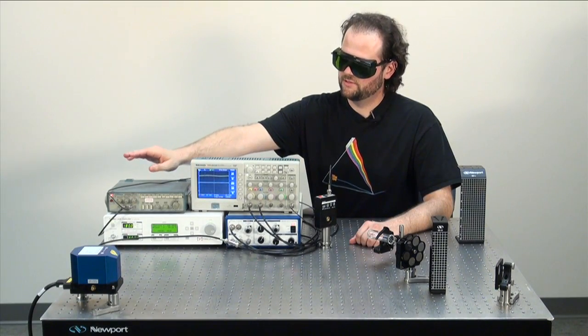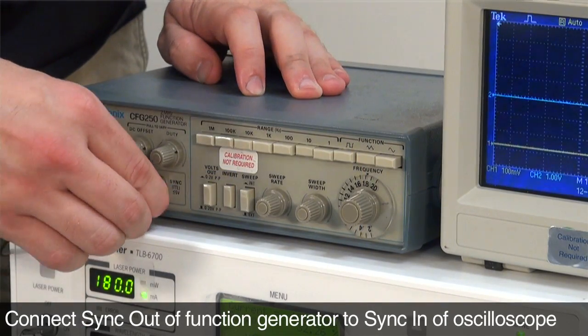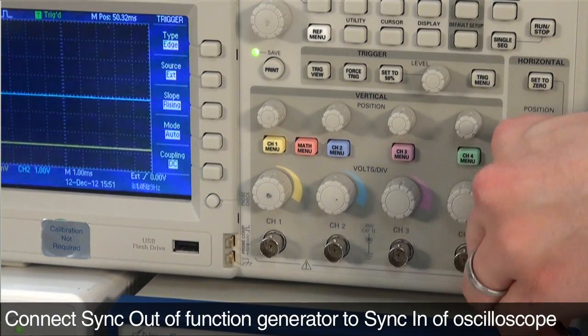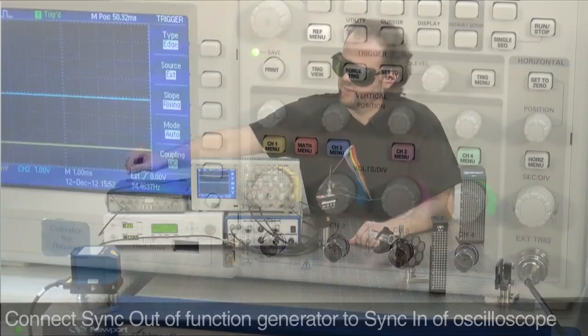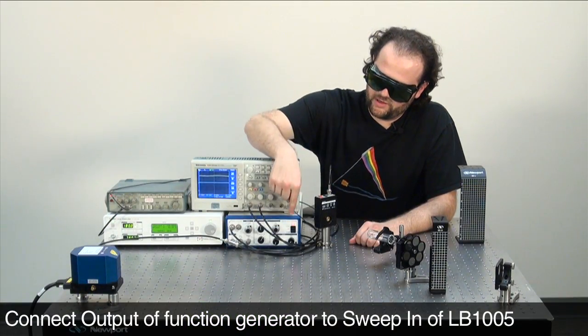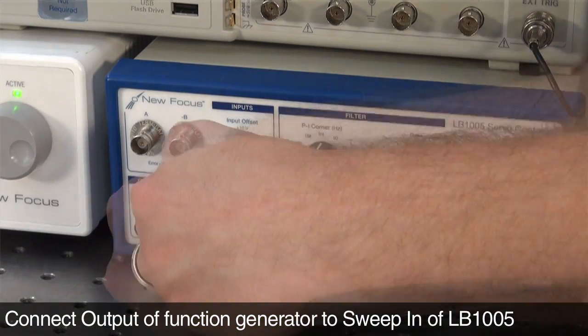First, take the sync out of your function generator and plug it into the sync in of your oscilloscope. Next, take the output of your function generator and plug it into the sweep in of the lockbox.